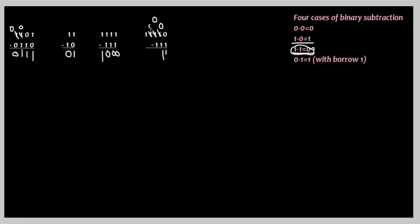0 is equal to 0. 0-1 is equal to 1. 0 is equal to 0. 0 is equal to 1. 1 is equal to 1. So, binary subtraction is equal to 0. We will be able to do this. Thank you!